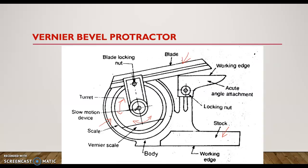Another measuring face is provided by the blade. There is also one more attachment known as the acute angle attachment. An acute angle means an angle between 0° and 90°. If we want to measure an angle between 0° and 90°, we use the acute angle attachment. The object can be placed in the gap to measure the angle.